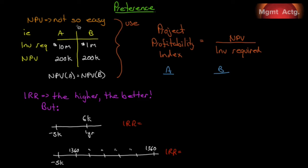With NPV, it's not so easy. Let's take two projects, A and B. The investment required was $10 million for A, $1 million for B. The net present value of both are $200,000. So they're both NPV positive, but we don't know if we're going to actually do them yet — we still have more analysis to do. On a net present value basis, NPV of A equals NPV of B.